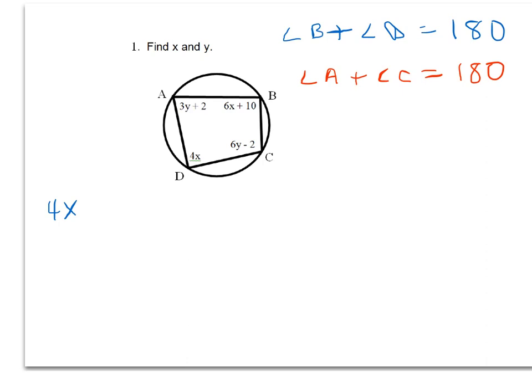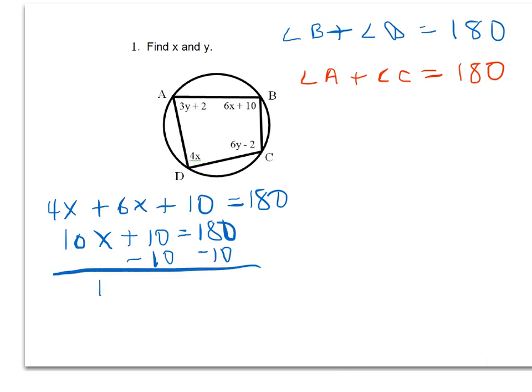Angle B plus angle D, I'm going to write down the terms, set them equal to 180 degrees, and then solve. Combining like terms gives me 10x plus 10 equals 180. And then solving for x, I get x equals 17.